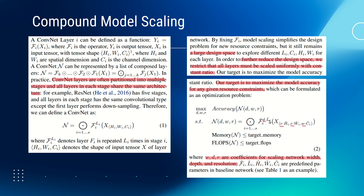What compound scaling tries to do is shown on the right-hand side. Depth means more layers, so we have a multiplier that affects the number of layers — we make it deeper. Then we change the resolution using multiplier R for height and width. And we also have a width multiplier W for the channels. Don't get confused: the width terminology here is not about the image width — when talking about images, we always use the term resolution. Width here always means the number of channels.